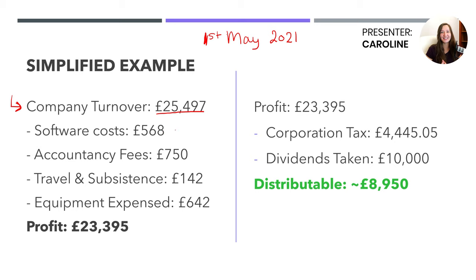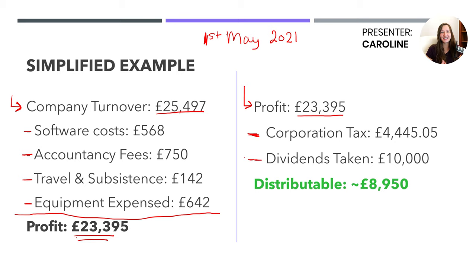So far the company made £25,497 in turnover. It had software costs of £568, accountancy fees of £750, travel and subsistence of £142, and equipment expense of £642. Once we subtract all these amounts from the turnover, we get a profit figure of £23,395. Moving to the right-hand side, we subtract the corporation tax liability at 19%, and also subtract dividends already taken of £10,000 since 1st May 2021. What's left over are the distributable reserves in the business that you can legitimately take as dividends.